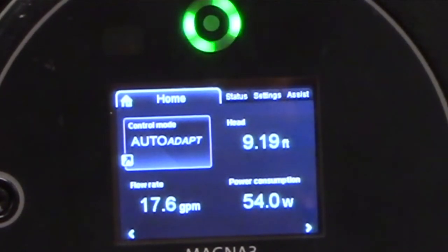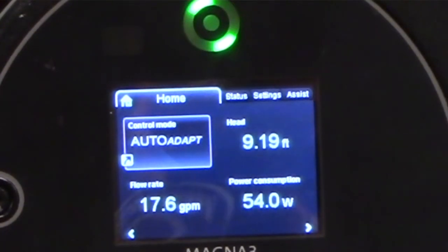Settings is where you're going to change all your values. So settings is completely the polar opposite of status. The last one is assist. If you're setting up a dual pump performance, as an example, you go to assist and it walks you straight through.